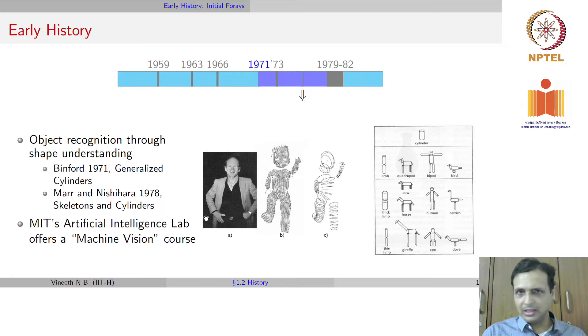Then between 1971 and 1978, that period was also known as the winter of AI. But at that time, many efforts on object recognition using shape understanding, envisioning objects as summations of parts - the parts could be cylinders, different kinds of skeletal parts. Generalized cylinders, skeletons and cylinders were all efforts at that time. Importantly, there was also the world's first machine vision course offered by MIT's AI lab in the 1970s. In the 1970s, one of the first products of computer vision was developed which was optical character recognition, developed by Ray Kurzweil, who is considered a visionary for the field of AI.